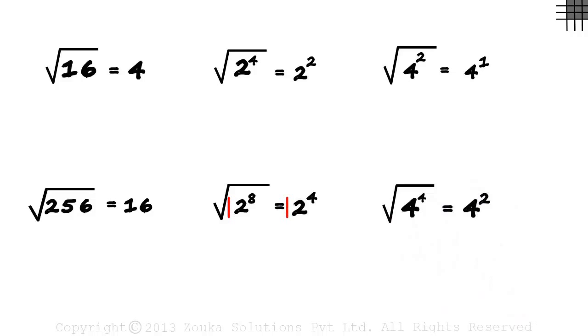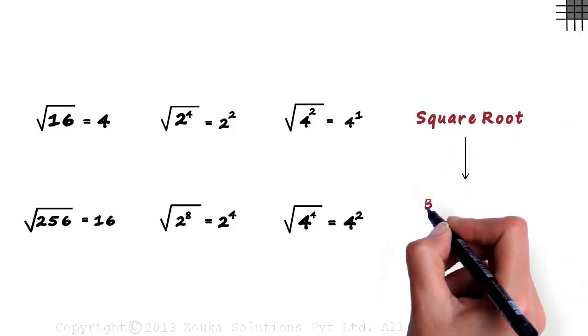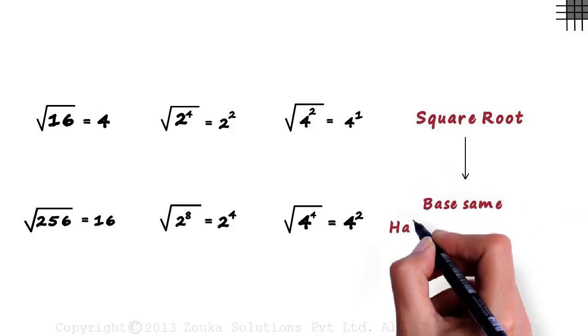In this case, the base remained the same and the exponent was halved. And in this case too, the exponent was halved. So remember, when you have a number in exponential form and you want to find its square root, just keep the base the same and half the exponent.